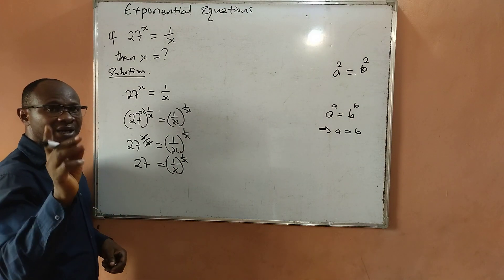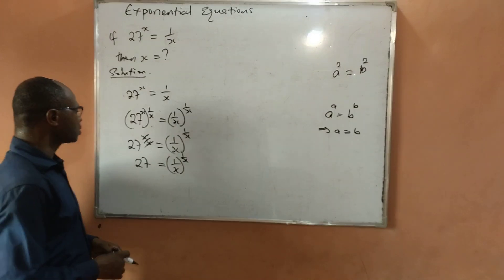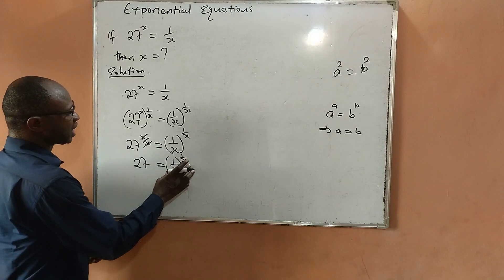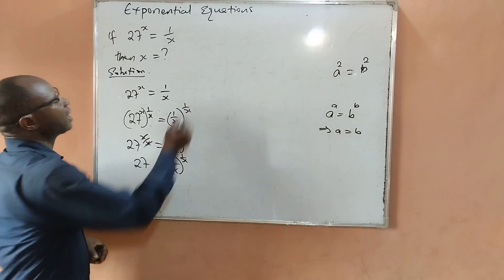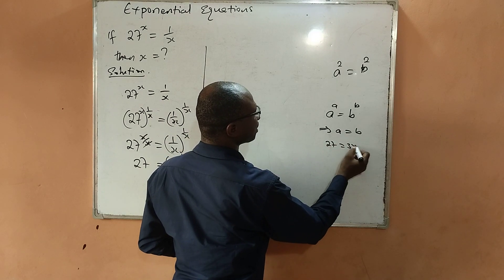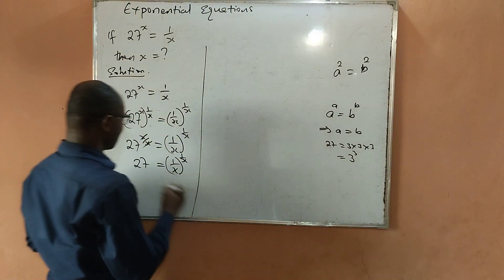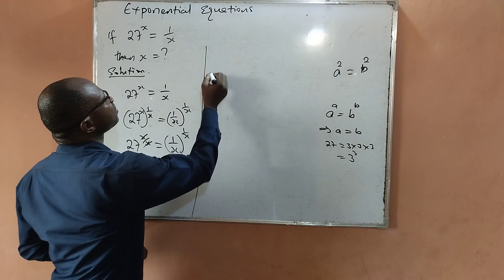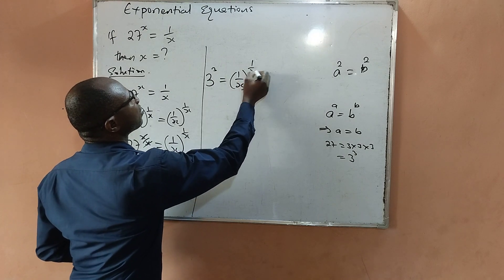By the left-hand side, I need to express 27 so that its base is the same as its power — matching what we have on the right. We know that 27 equals 3 times 3 times 3, which means 3 to the power of 3. So I can write 27 as 3 raised to power 3, equal to 1 over x to the power of 1 over x.